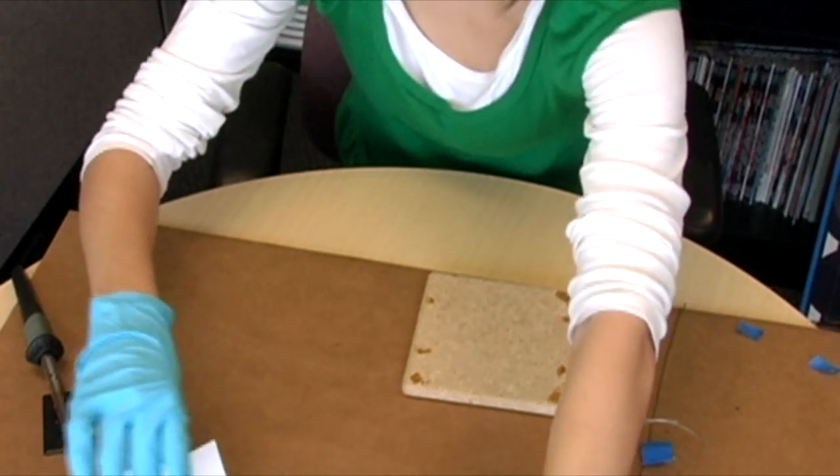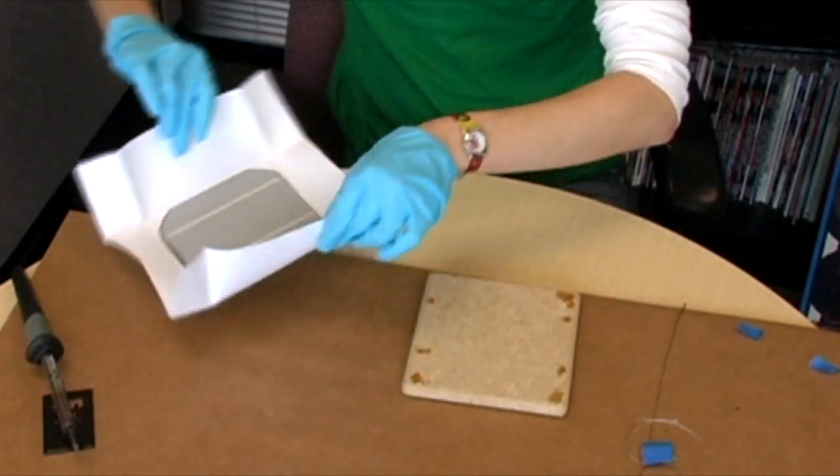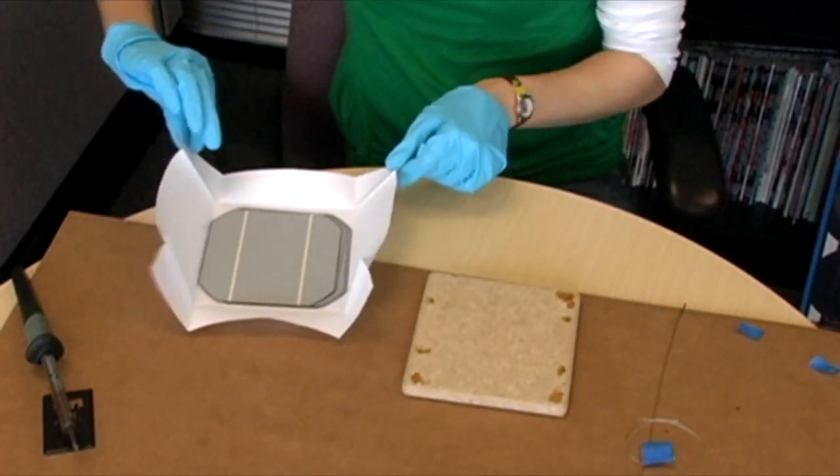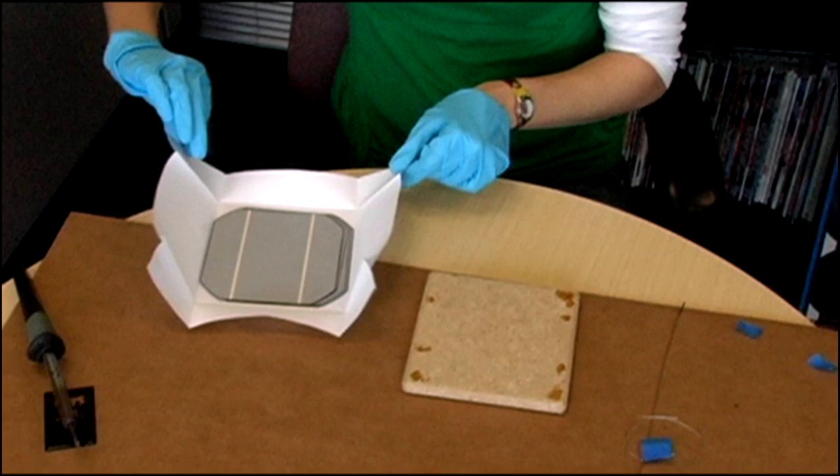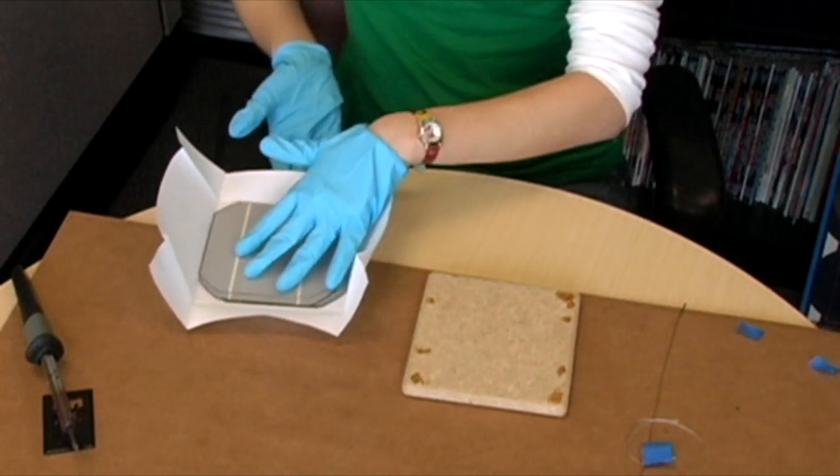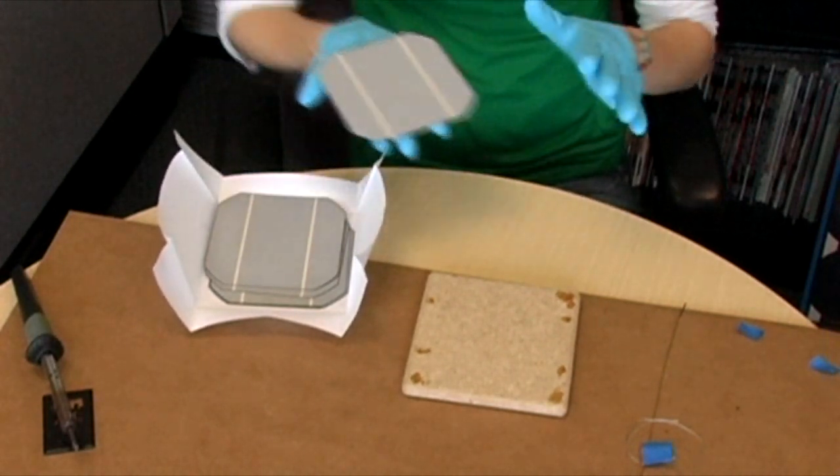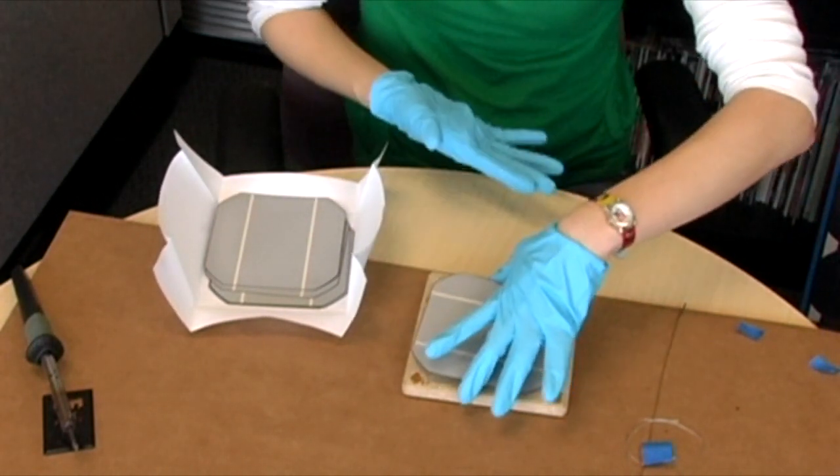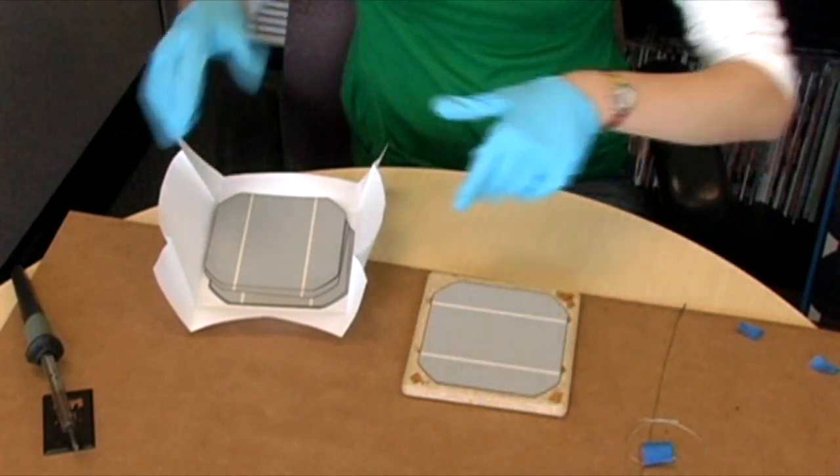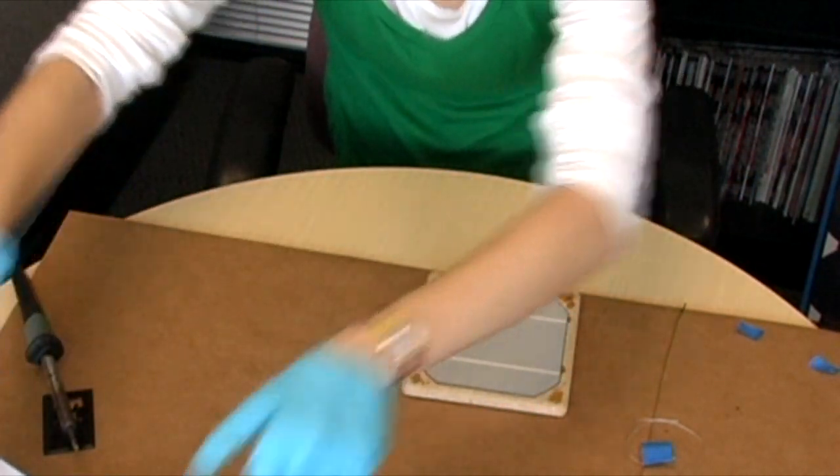Since the solar cells are extremely fragile, the best way to remove them from their stack is to pick up the stack by the paper and place it near the edge of your table. Then you can carefully slide the top solar cell into the palm of your hand and gently place the solar cell onto your cell workbench. Your cell workbench is one of the square pieces of wood that protected the cells during shipment.